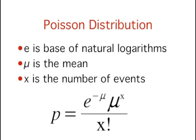The probability, p, can be computed using this formula, where e is the base of natural logarithms, μ is the mean number of successes, and x is the number of successes in question.